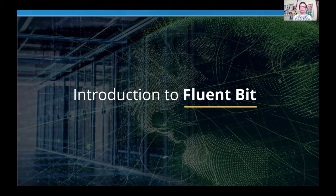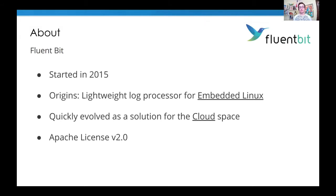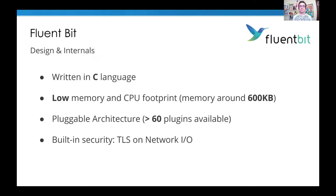This is where we introduce one of the logging agents in the ecosystem: FluentBit, part of the FluentD ecosystem. FluentBit is a project started around 2015, originally for embedded Linux, but quickly evolved to the cloud space. It's under the Apache license and written in pure C. The goal was a highly optimized logging agent with minimal CPU and memory usage. Despite being written in C, it's not limited — we have a plugin architecture with more than 70 plugins, built-in security, and flexible pipeline configuration.